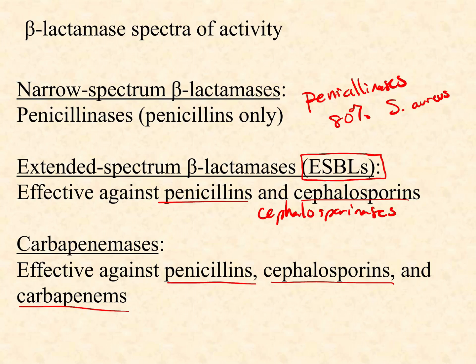Ideally we'd use straight penicillins when we don't suspect a penicillinase beta-lactamase. Other times we jump to cephalosporins when we're worried about a penicillinase but don't suspect an ESBL. We only use carbapenems when we have to, because they're hard on the patient's body and must be delivered through injection or IV — you can't give patients a little bottle and send them home expecting compliance. So we avoid the carbapenems if we can help it.